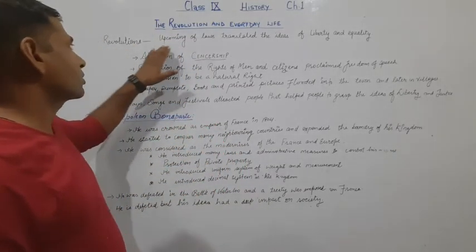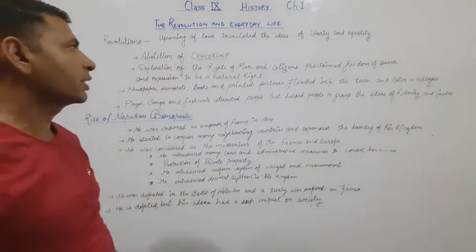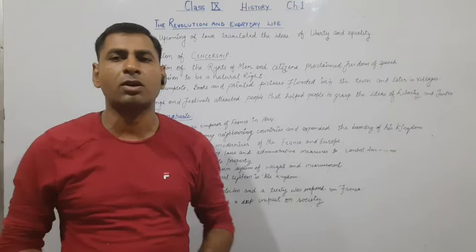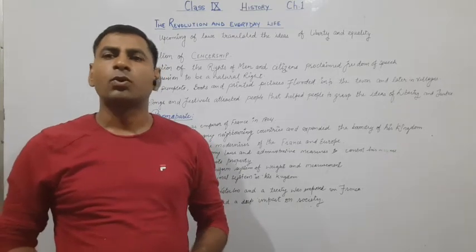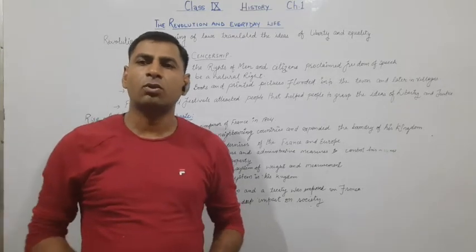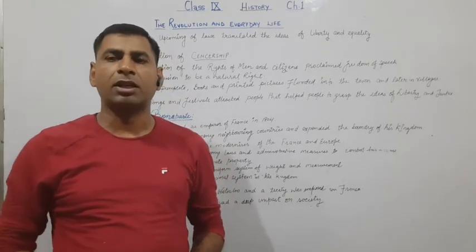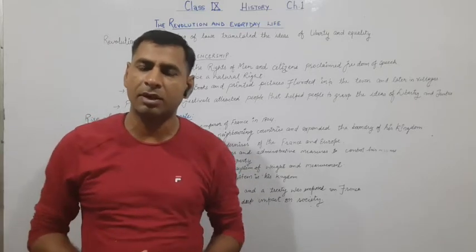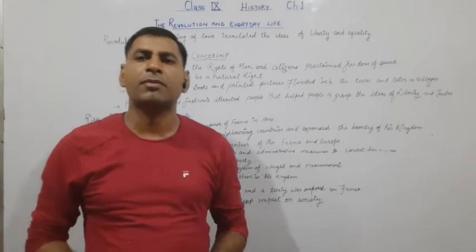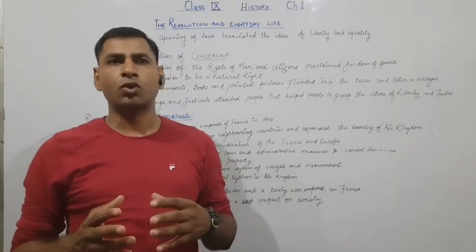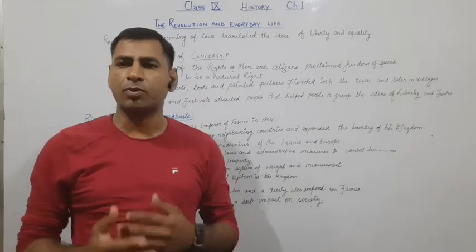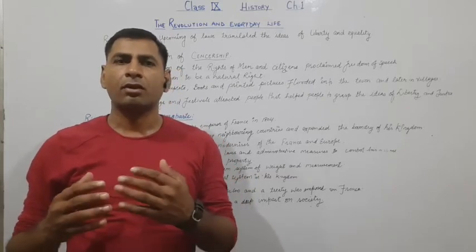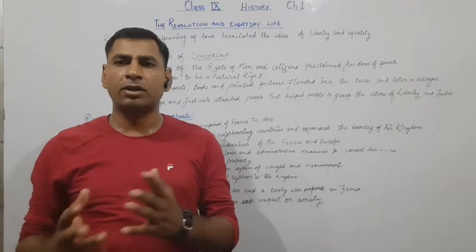The very first thing is that the revolution and the upcoming laws translated the idea of liberty and equality. What happened? People came to know about liberty and ideas. They were introduced to these ideas. A convention came in front of us, a national assembly came in front of us. Philosophers explained the power of the Third Estate and all this.